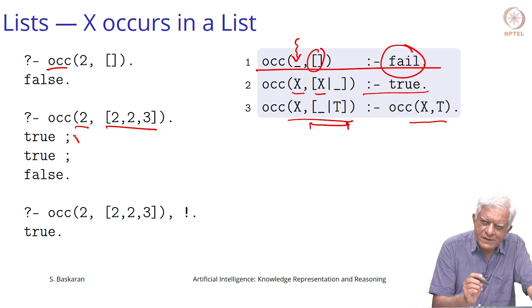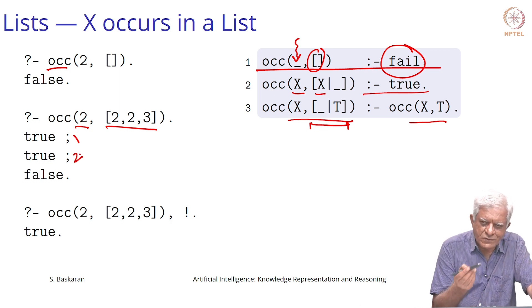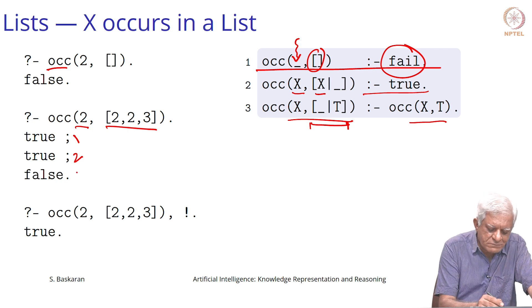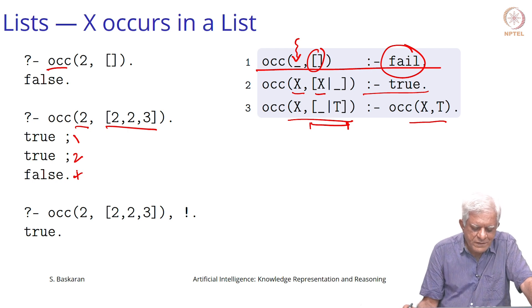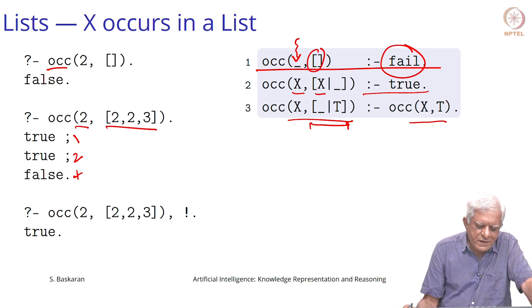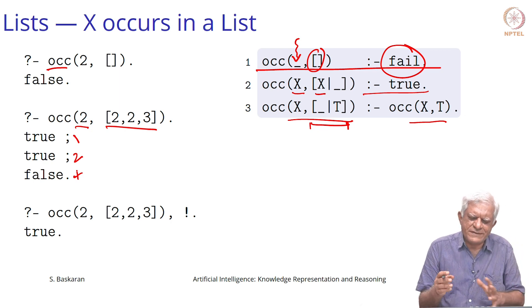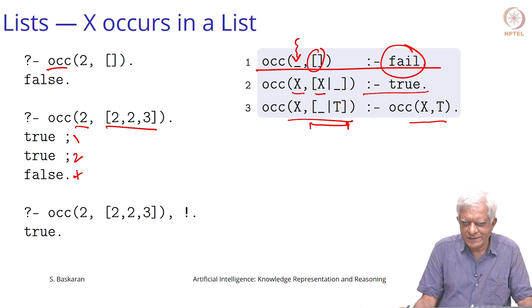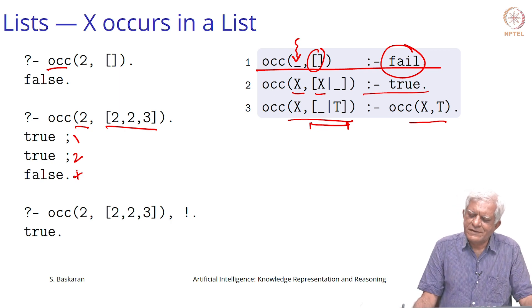But if you ask does 2 belong to the list containing 2, 2, 3, then it will say yes one time, then for the second time it says yes again. It has found another 2, and then it says that is all, so no more 2s inside the list. Now, if you want to be careful and simply say that just tell me whether it is there in the list or not, do not tell me all occurrences of that element, you can do so.